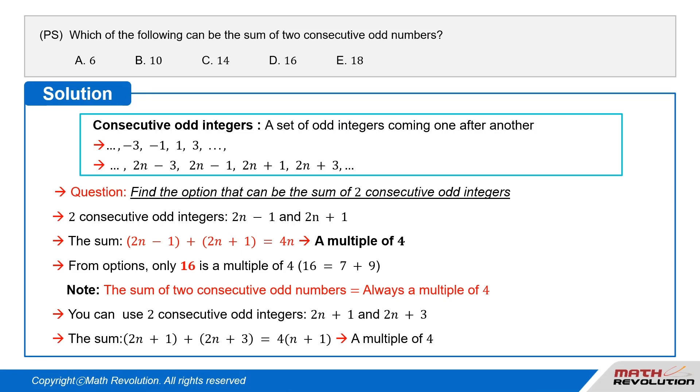It becomes 2 times n plus 1 plus 2 times n plus 3 equals 4 times (n plus 1), which is also a multiple of 4. Thus, D is the correct answer. Answer, D.